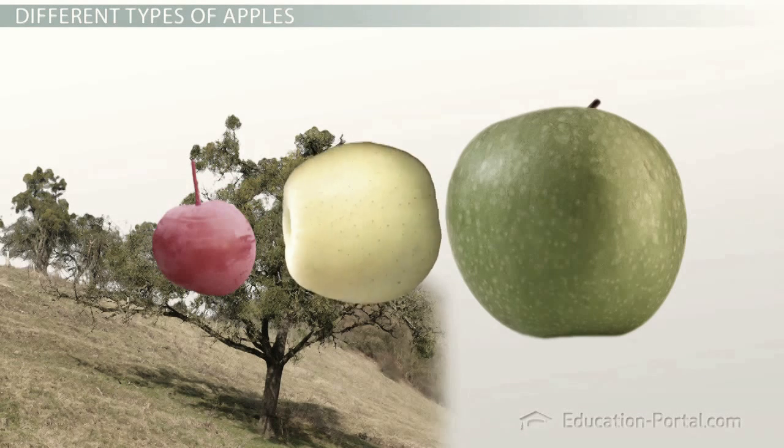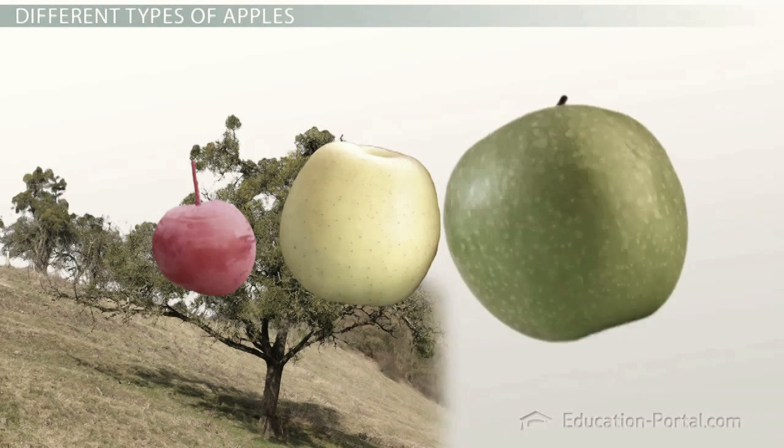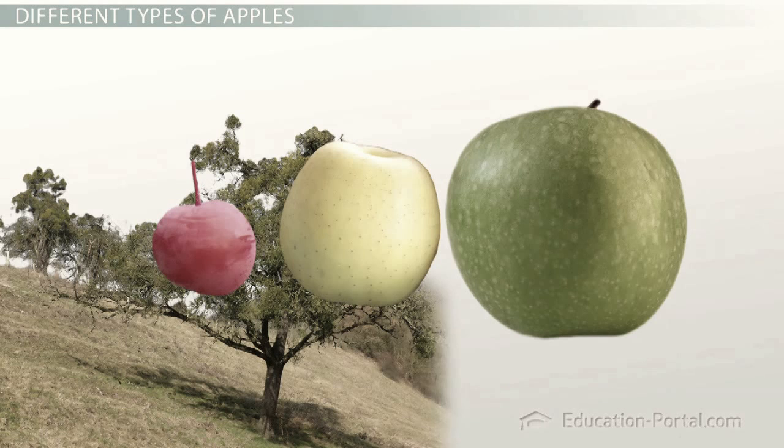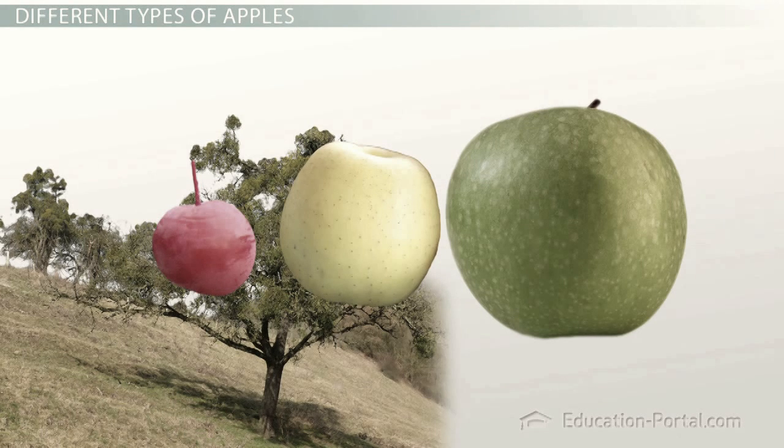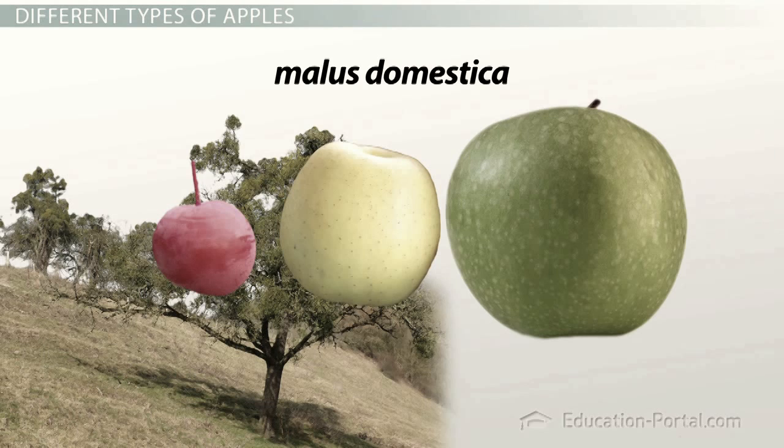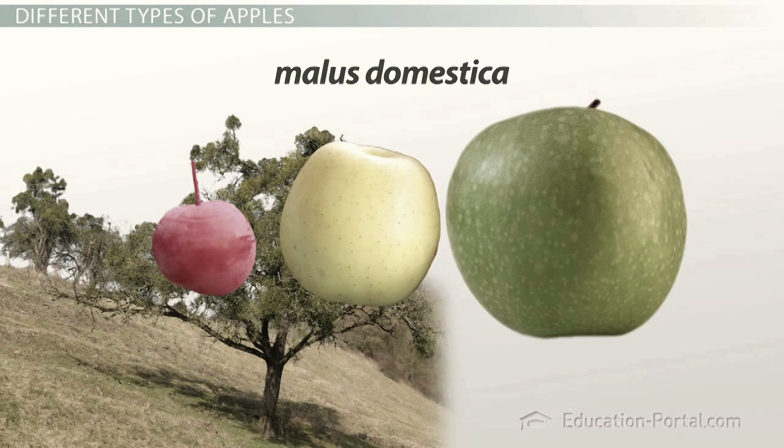The crab apple, the golden delicious, and the granny smith. All very different, but all still apples. So what makes them apples? They are all biologically named malus domestica. They grow on trees, they have stems, the list goes on.